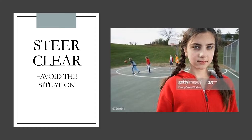The first refusal strategy is called steer clear. This strategy helps you avoid a peer pressure situation before it even starts. So if you see a group of kids known for causing trouble hanging out on the basketball court during recess, it's not a good idea to hang out with them — you're going to steer clear of those kids and find someone else to spend time with. Steer clear is used when you know pressure is likely to happen, to help you avoid situations. The rest of the strategies will help you if you are already in a peer pressure situation.